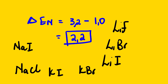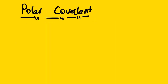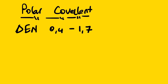Now let's look at polar covalent bonding. This type of bonding involves non-metals. In covalent bonding, whether polar or non-polar, electrons are shared — remember that in ionic bonding it is a transfer of electrons. The EN difference for polar covalent is between 0.4 and 1.7.